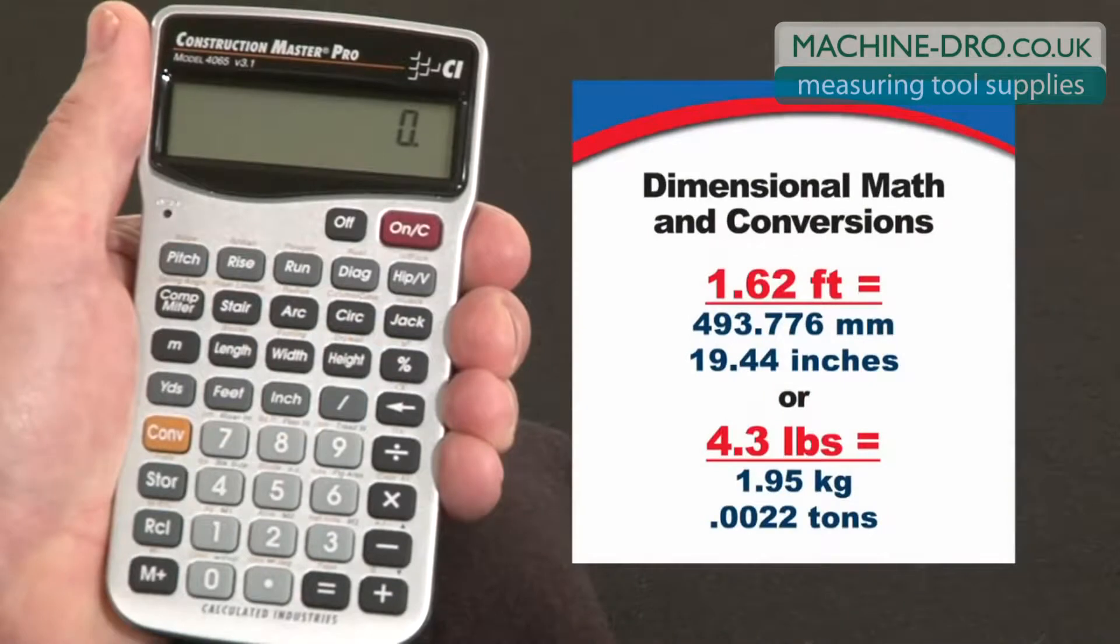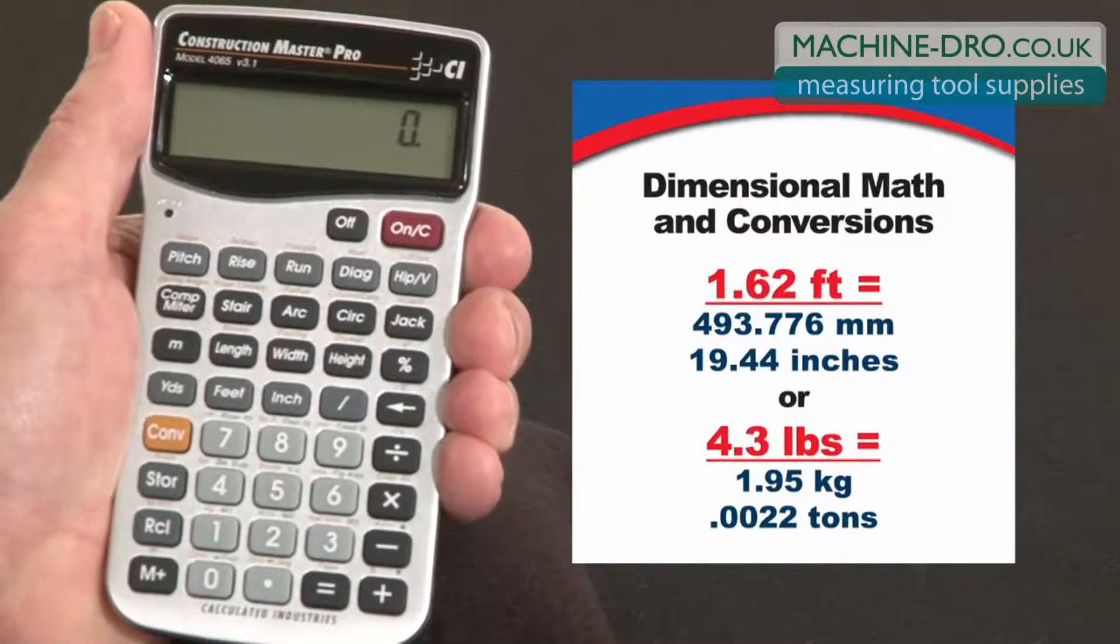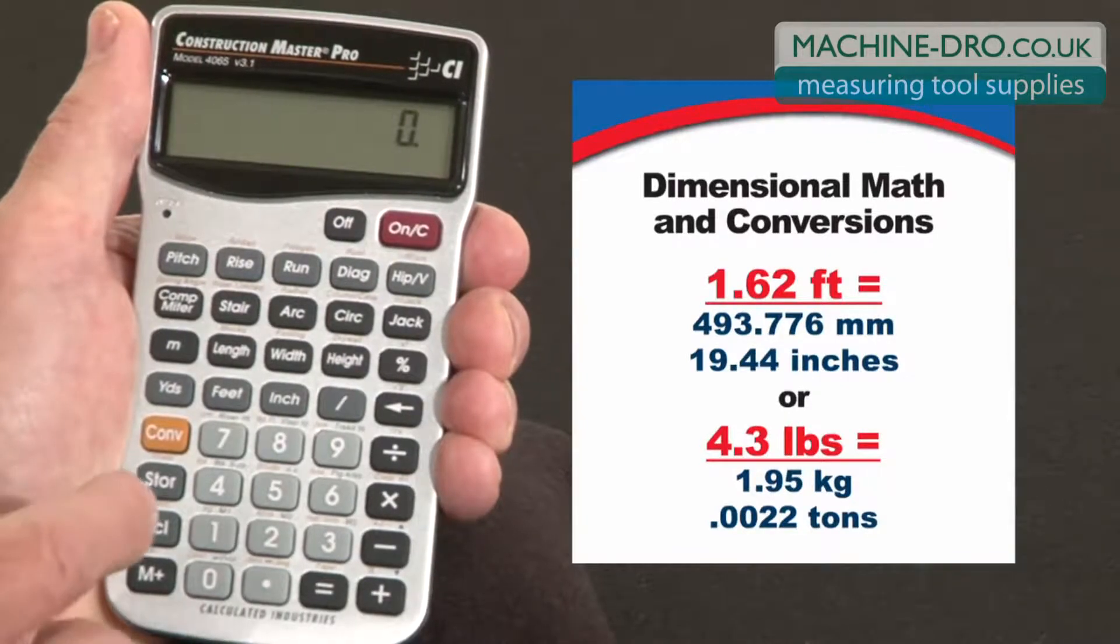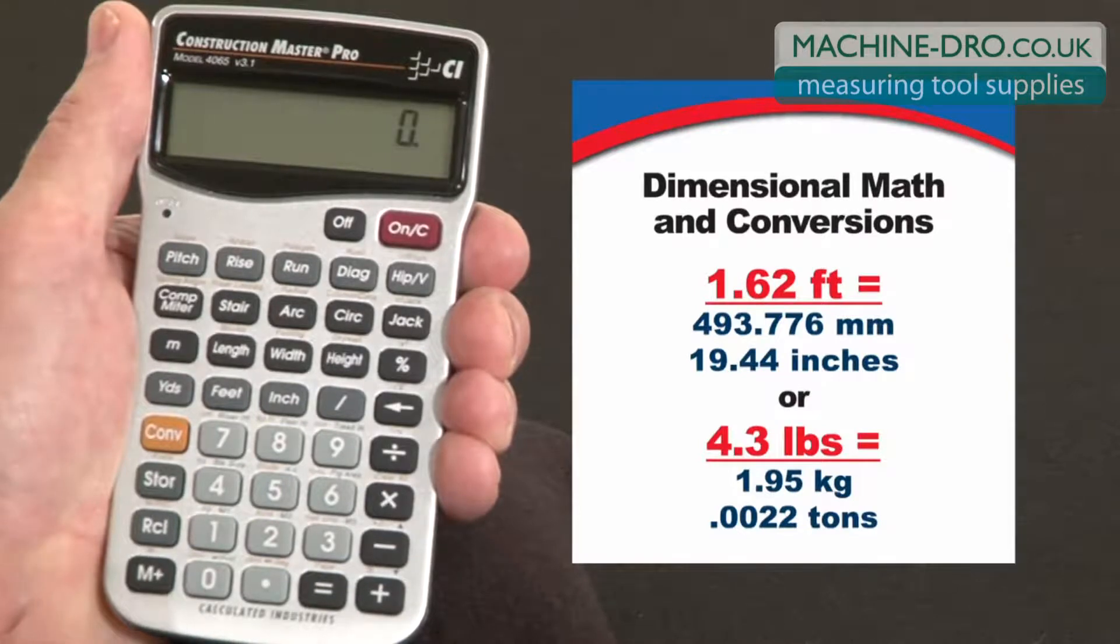Now let me show you how to do dimensional math and conversions on your Construction Master Pro. And keep in mind, the keystrokes are exactly the same if you're using our Trig model or our desktop models. Both give you fast, accurate solutions for all your dimensional math and conversion needs.